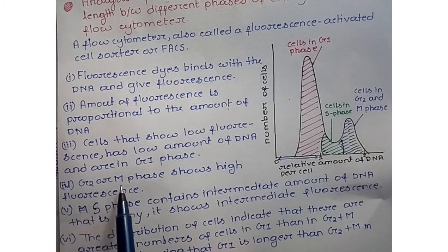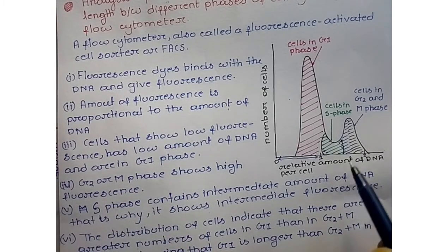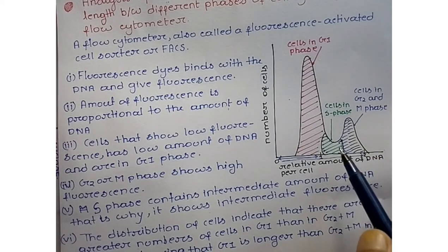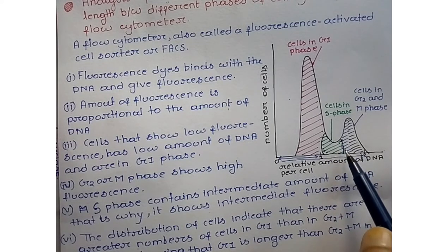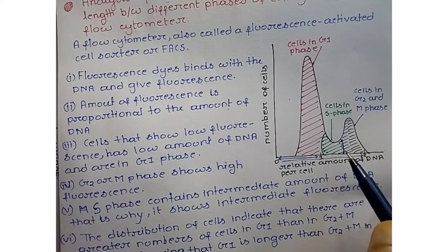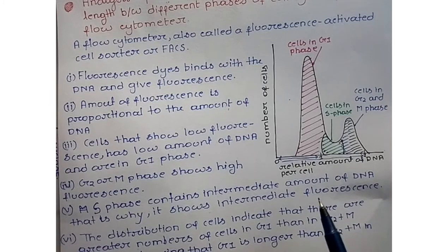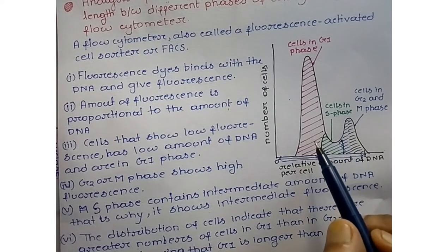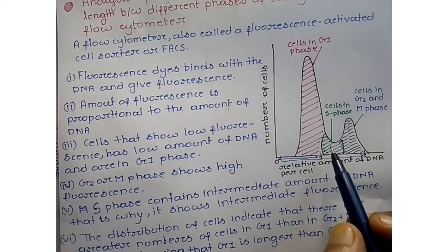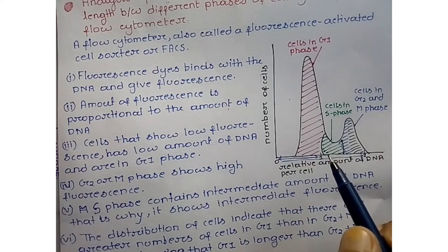G2 and M phase cells show high fluorescence because DNA replication ends in the early part of G2, resulting in a large amount of DNA. So the DNA amount is very high in G2 and M phase compared to G1 phase. Cells in S phase show an intermediate fluorescence level because they contain an intermediate amount of DNA — replication is still in progress.